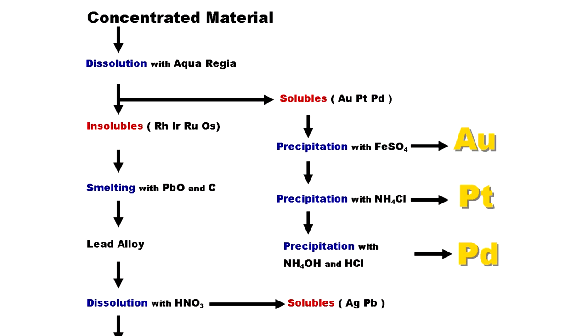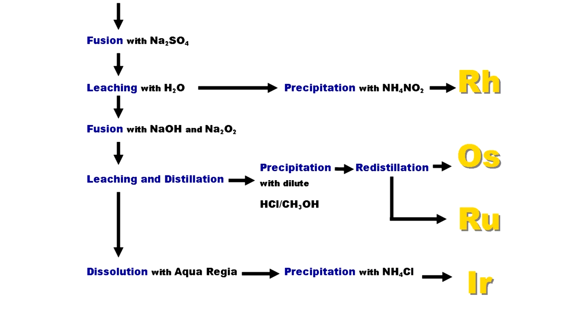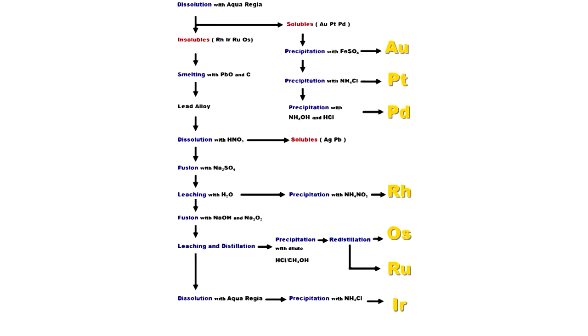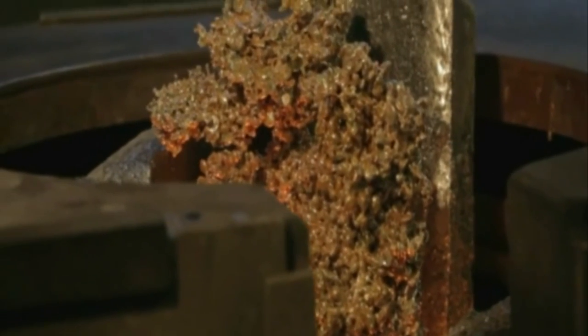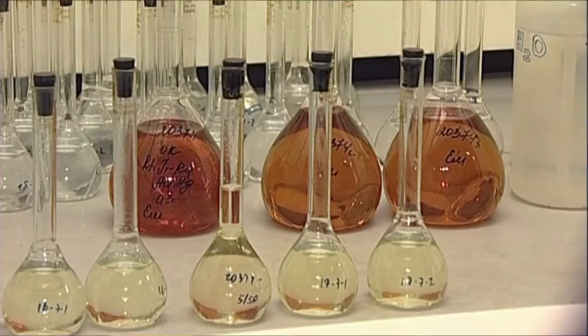The precious metal analysis process is like a small-scale precious metal refining operation as numerous steps and combinations of techniques are used. The objective of refining is to separate and economically recover precious metals, whereas analysis is performed to separate and precisely identify them.